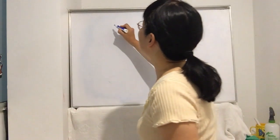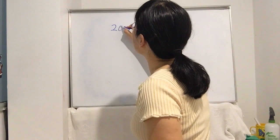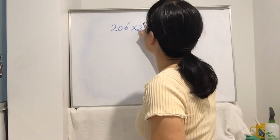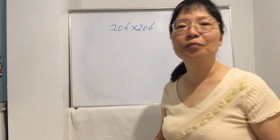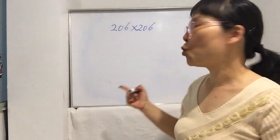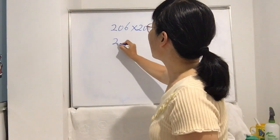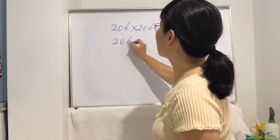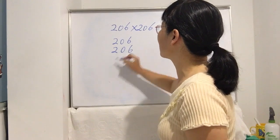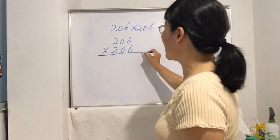Let's see the example: 206 times 206. How do you work it out? The normal way is 206 times 206. Let me show you both the normal way and the fast way.